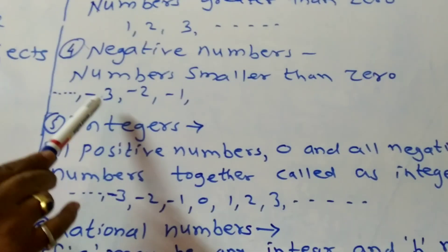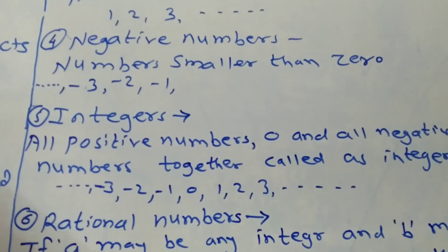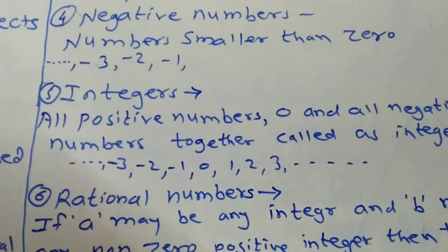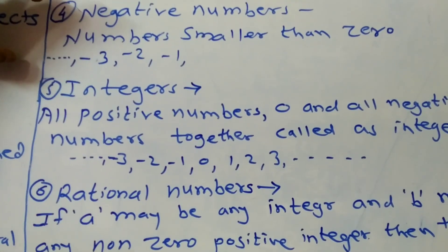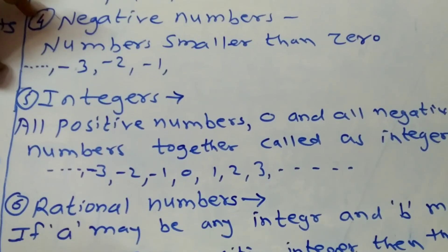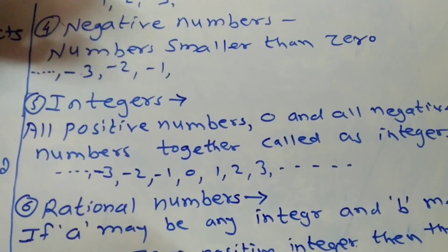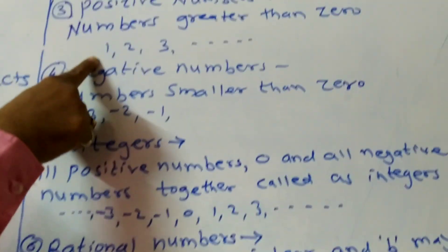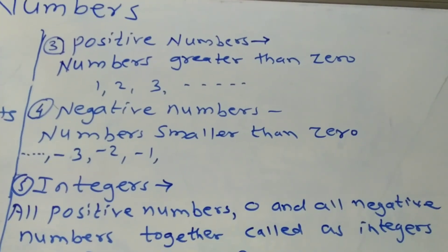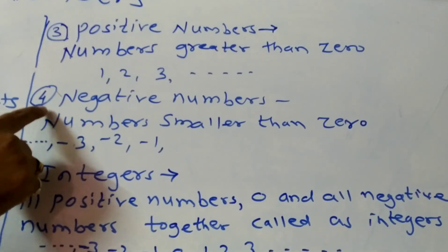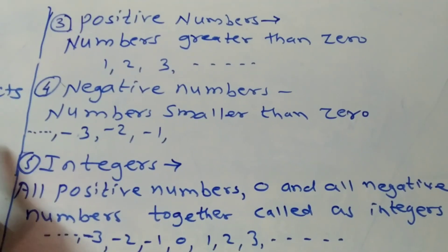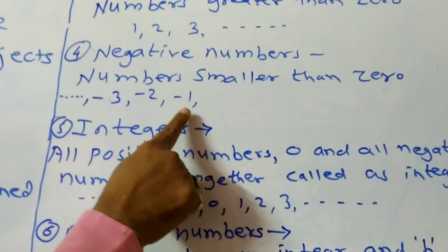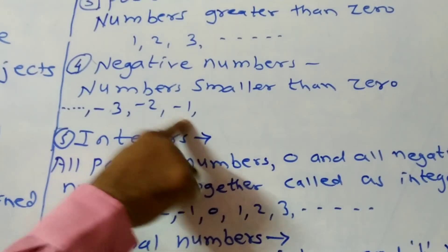Then negative numbers — the numbers which are smaller than 0, that means minus 3, minus 2, minus 1. These numbers smaller than 0 are called negative numbers. The smallest positive number is 1 and the largest positive number cannot be defined. But the largest negative number is minus 1.